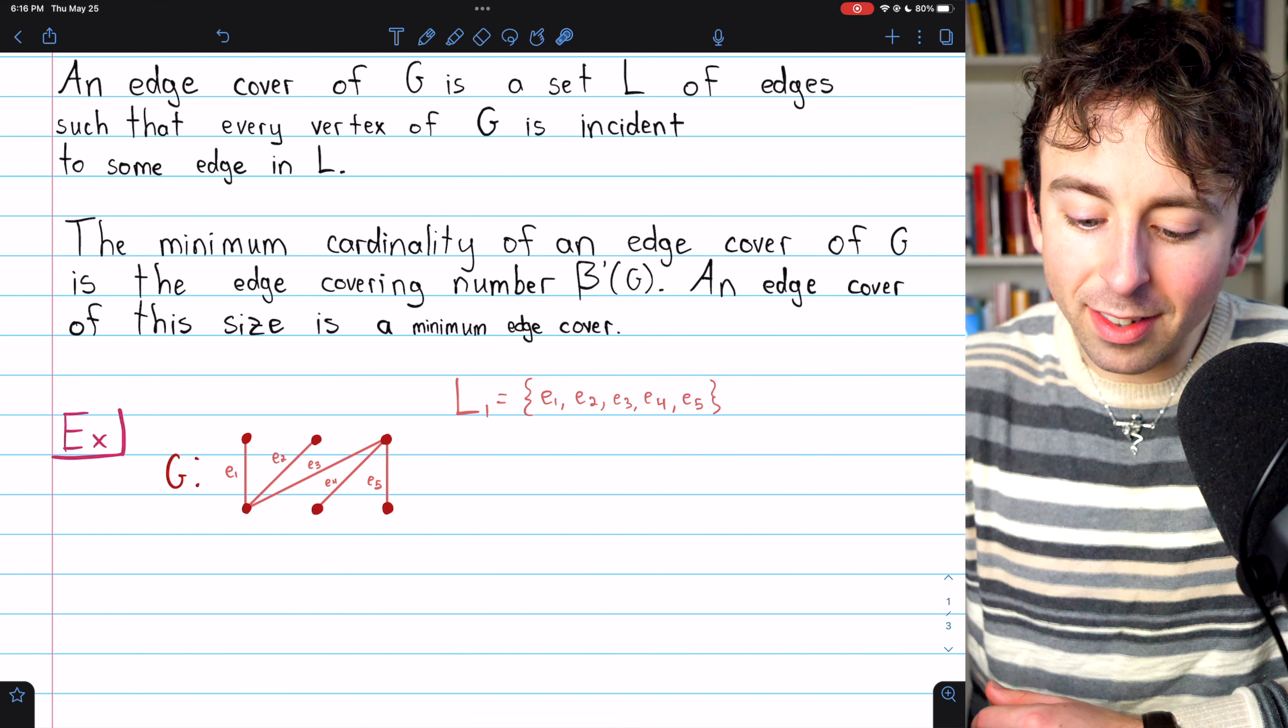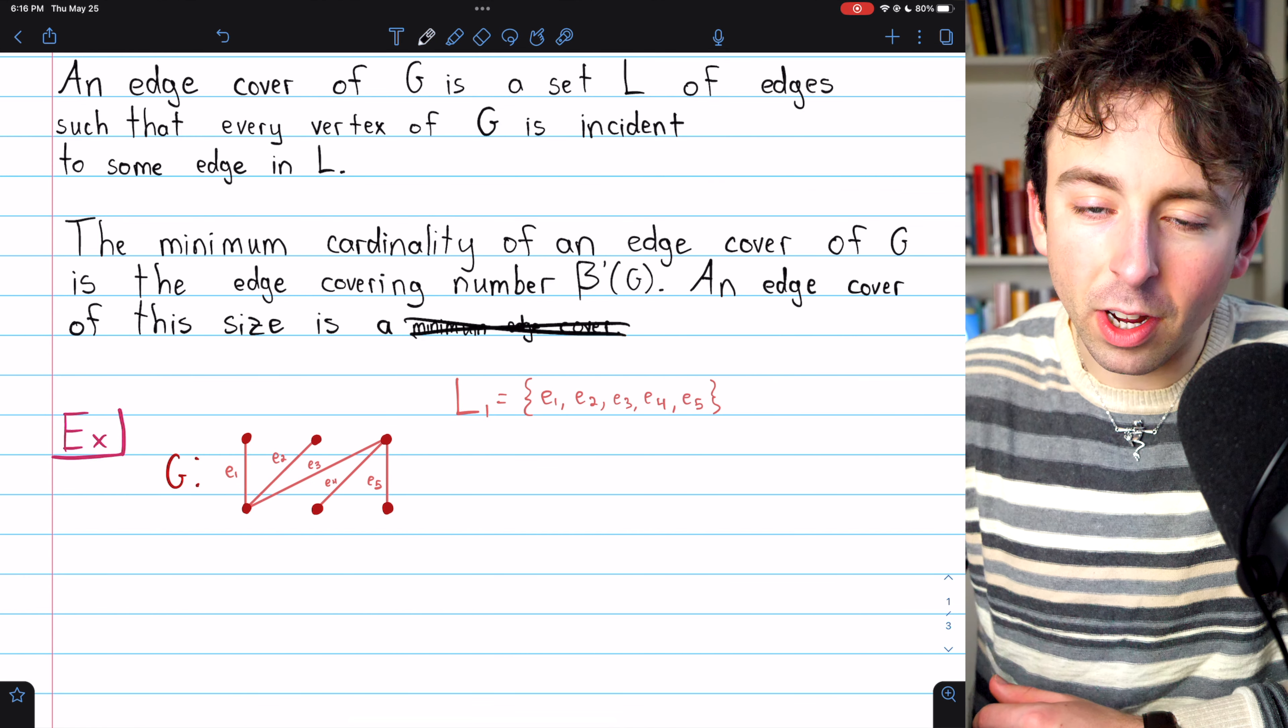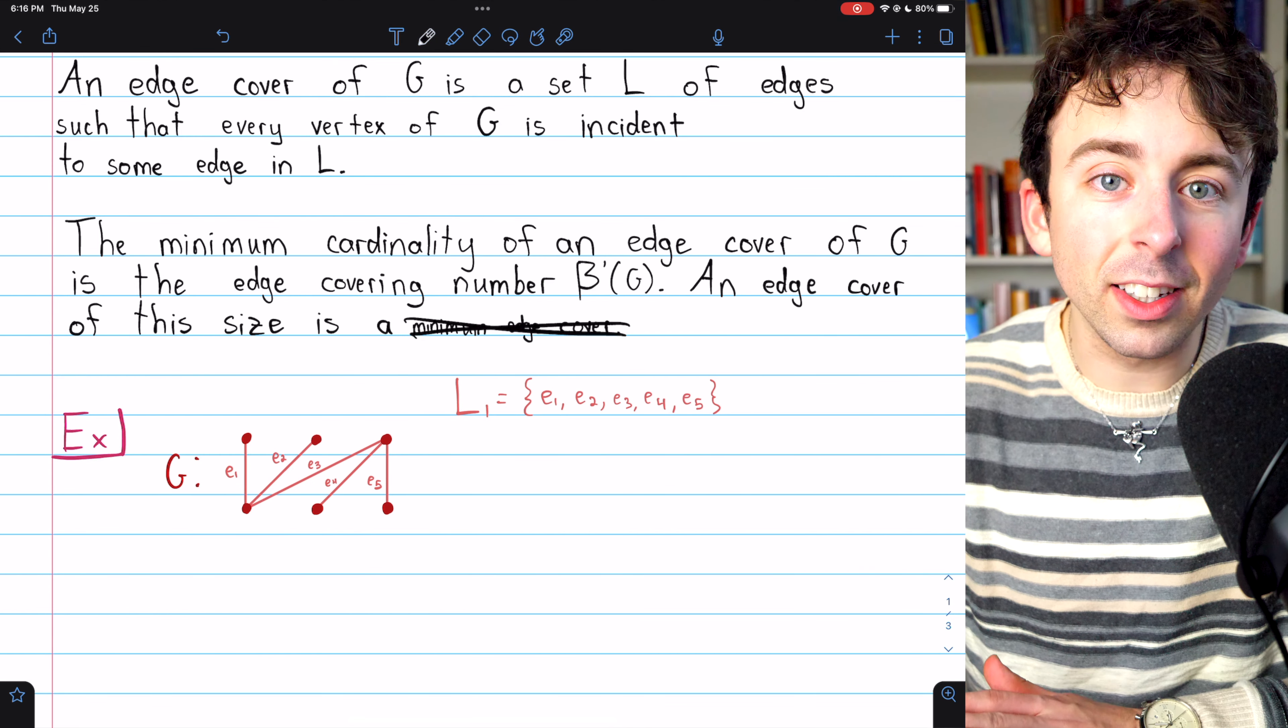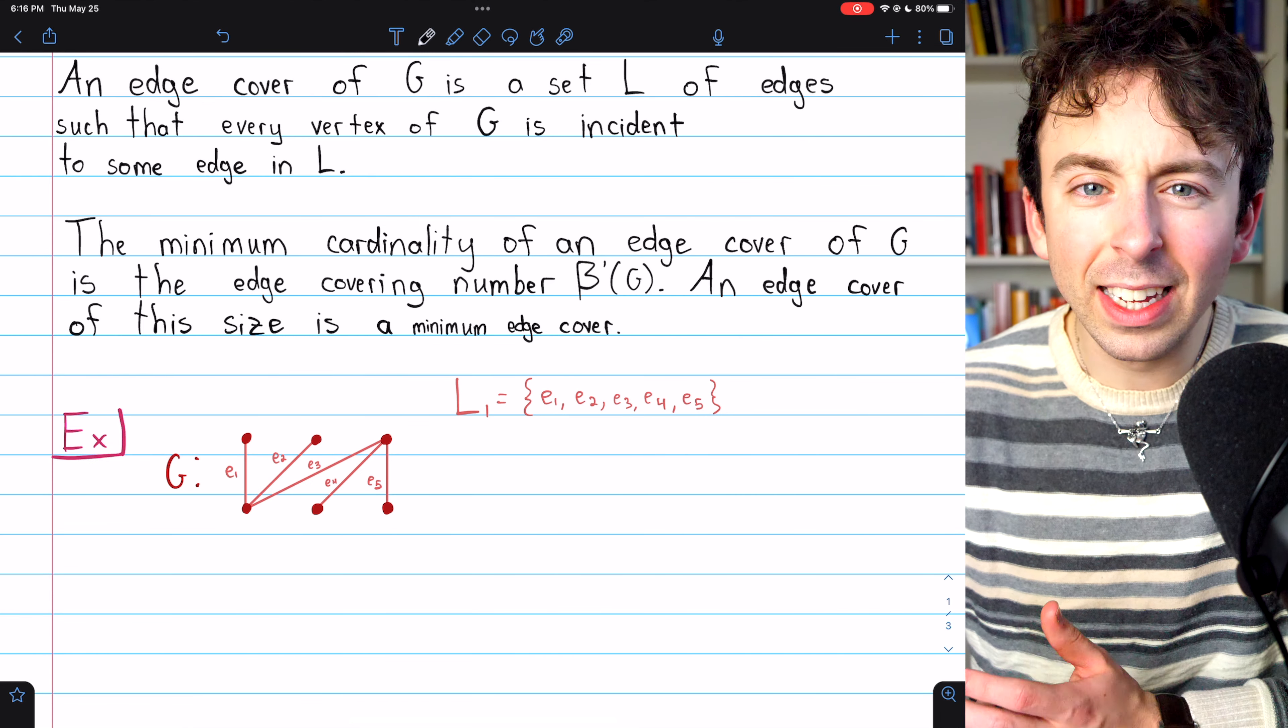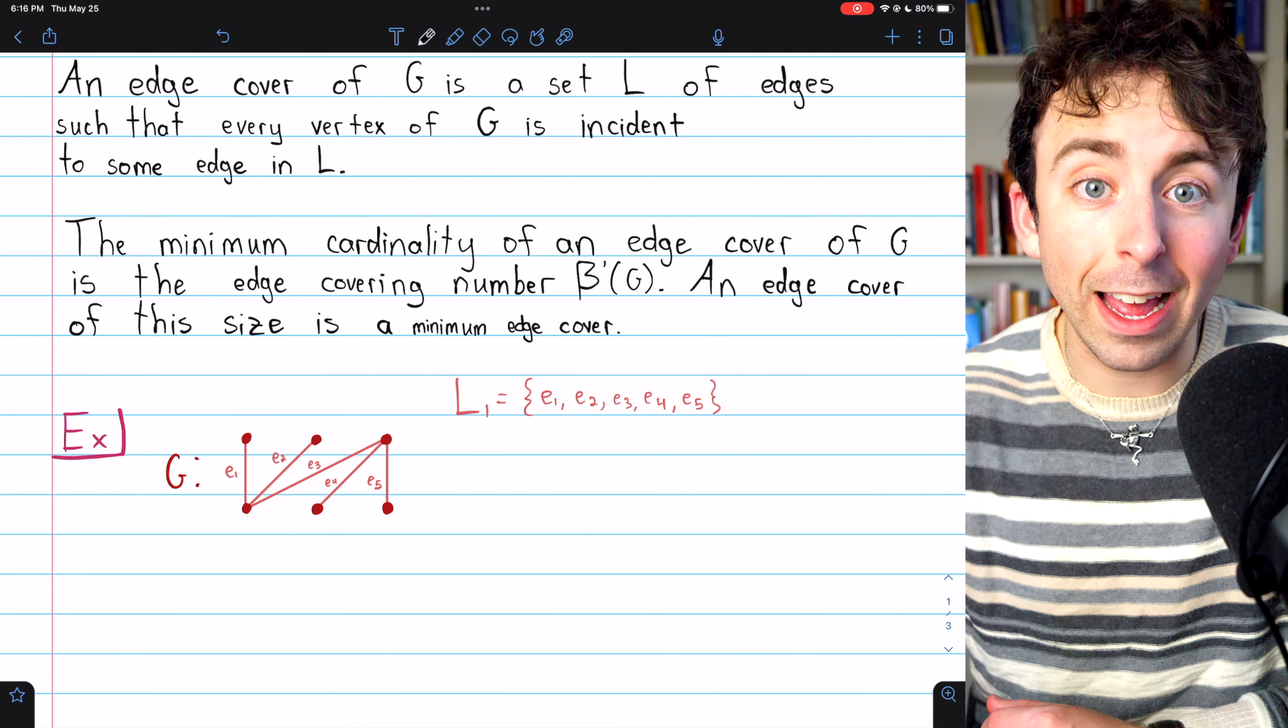In this case, L1 is not a minimum edge cover. We've included every single edge of the graph, which is not necessary to cover this particular graph. Can you think of a smaller edge cover?